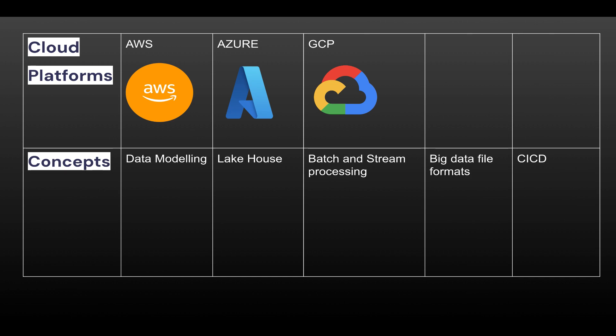As a data engineer, you should have strong hands-on knowledge of both batch processing — processing data in one go — and stream processing — processing data as soon as it arrives. You should also know big data file formats and how to process them. Additionally, CI/CD (continuous integration and continuous deployment) is important; you should have developed a CI/CD pipeline in your projects, as most companies require this and it gives you a strong edge over other candidates.